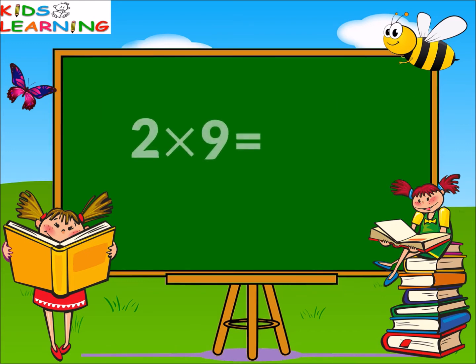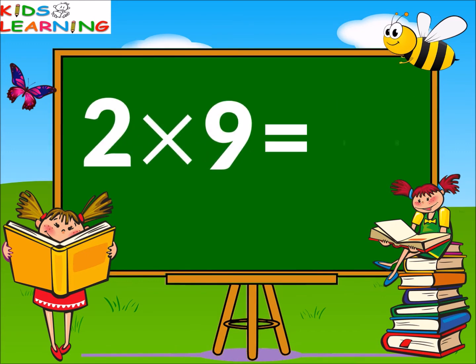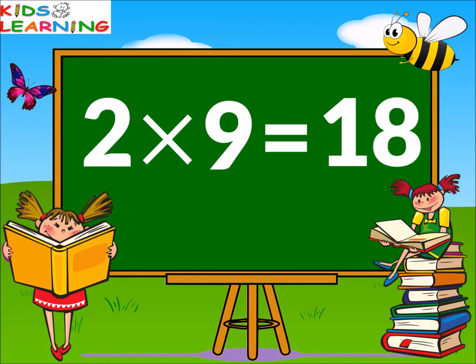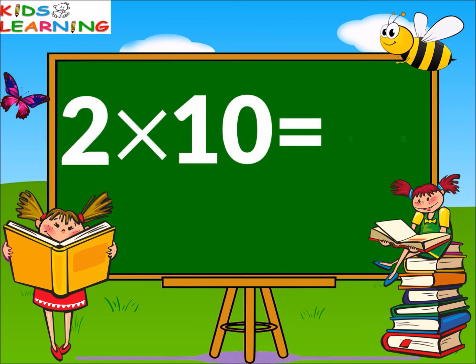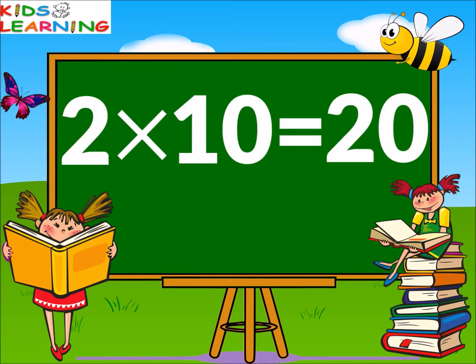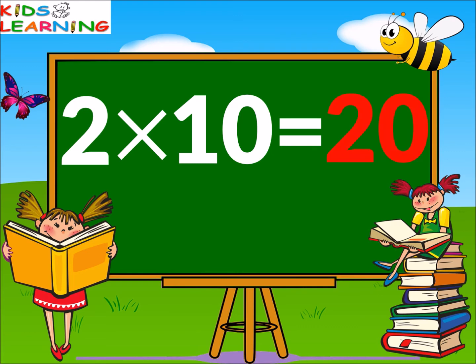Two nines are eighteen. Two tens are twenty.